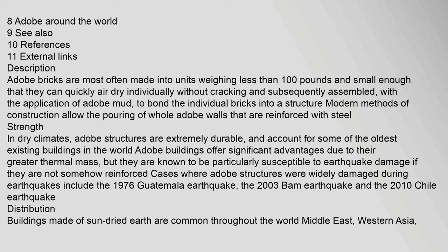Modern methods of construction allow the pouring of whole adobe walls that are reinforced with steel. In dry climates, adobe structures are extremely durable and account for some of the oldest existing buildings in the world. Adobe buildings offer significant advantages due to their greater thermal mass, but they are known to be particularly susceptible to earthquake damage if not reinforced. Cases where adobe structures were widely damaged during earthquakes include the 1976 Guatemala earthquake, the 2003 Bam earthquake, and the 2010 Chile earthquake.